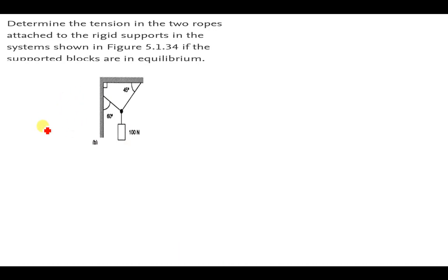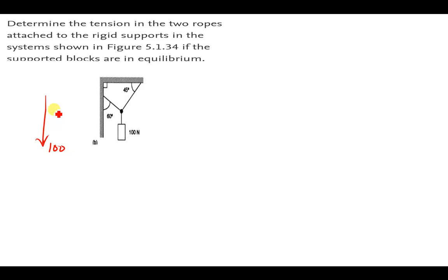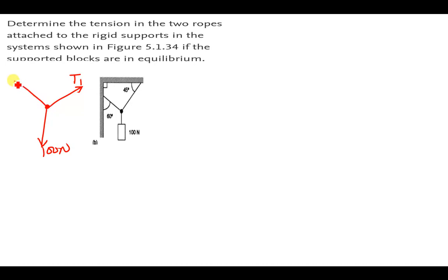The free body diagram has this force which is 100 newtons. We make the assumption that all forces are moving away from the joint. Then we have this other force going this side — I'll call it T1 — and this one is 100 newtons. Then I also have T2.